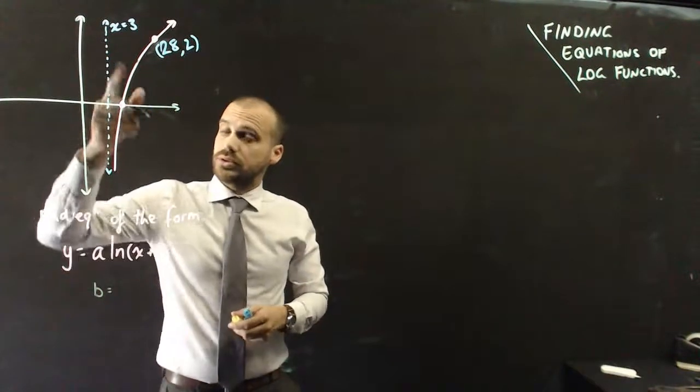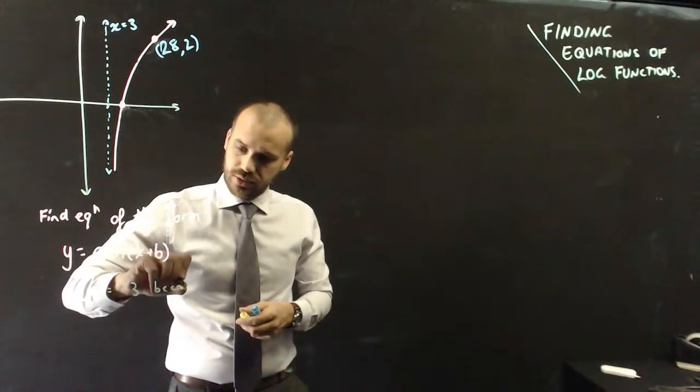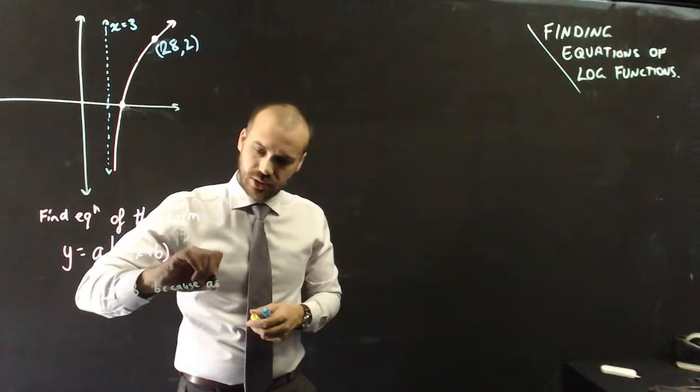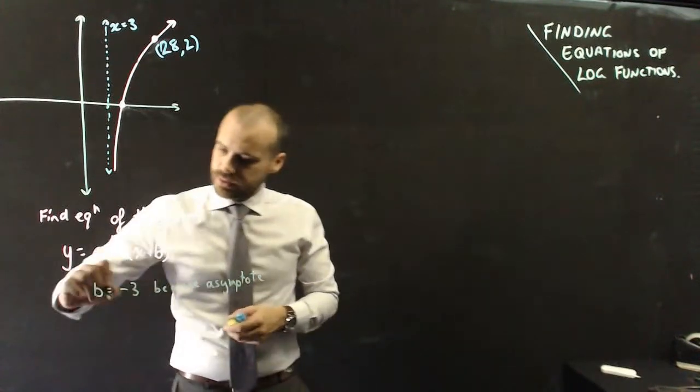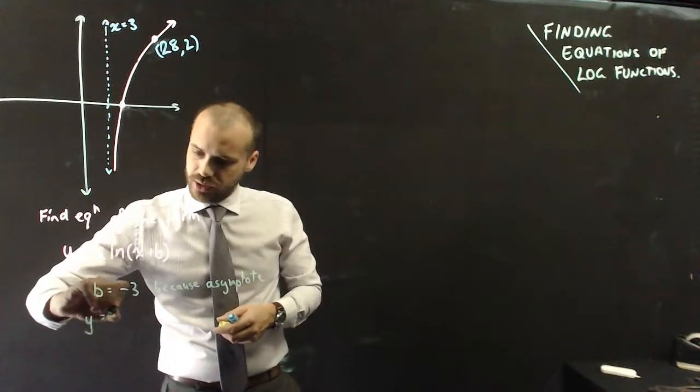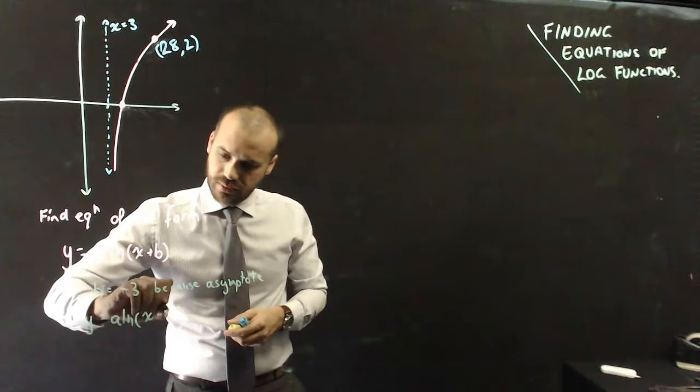b equals, no, opposite of that, negative 3 because asymptote. So that's pretty straightforward, y equals a ln(x minus 3).